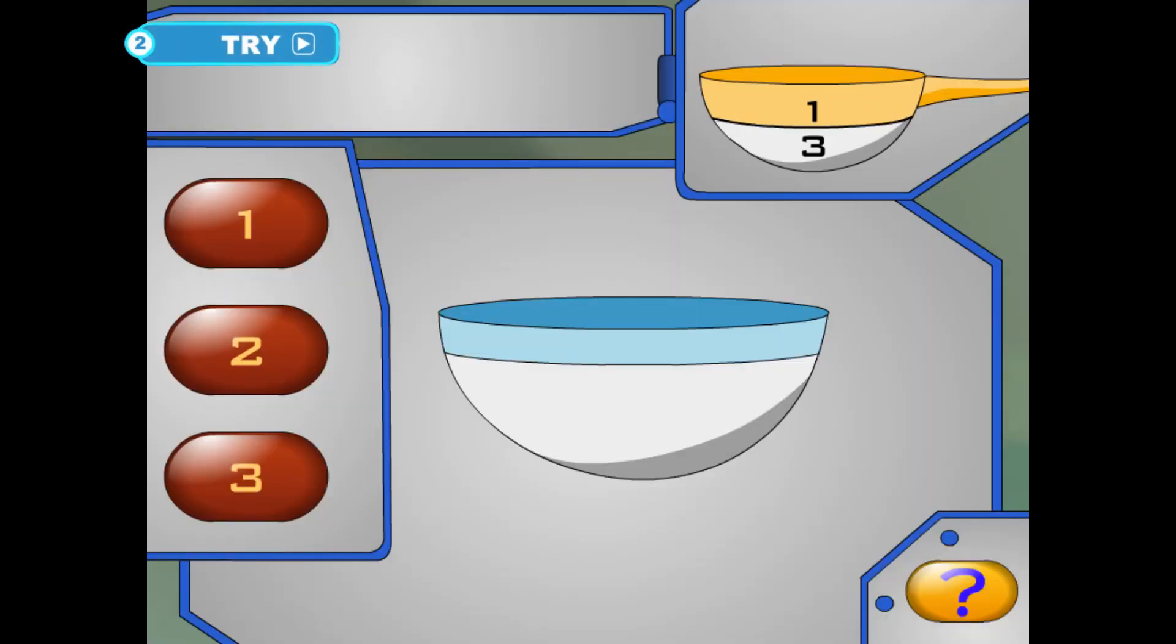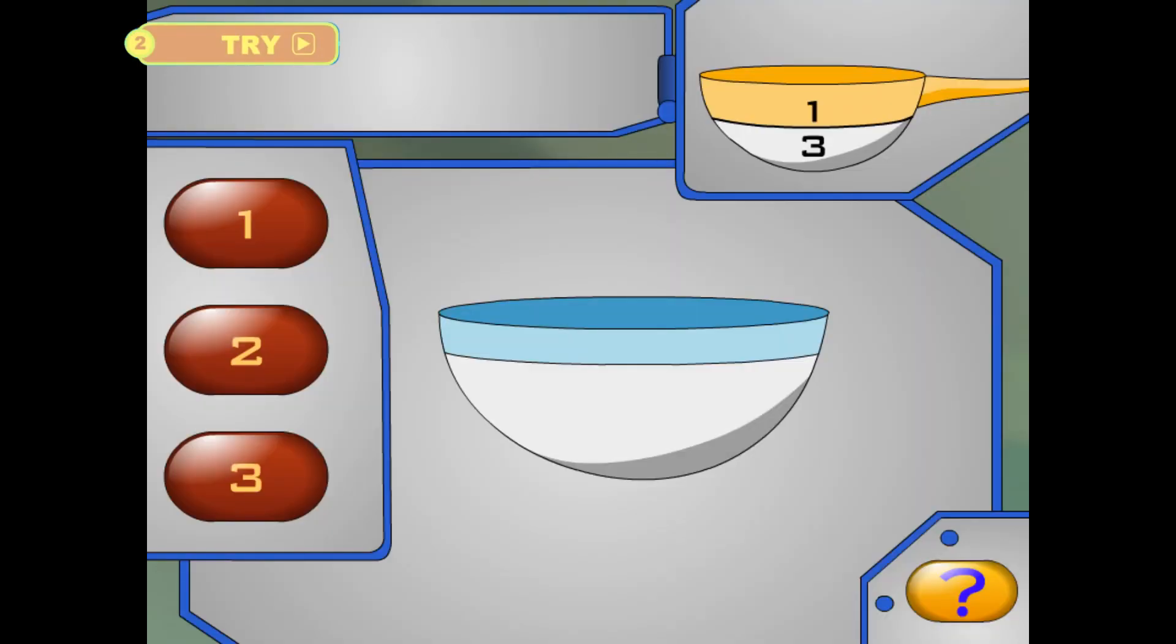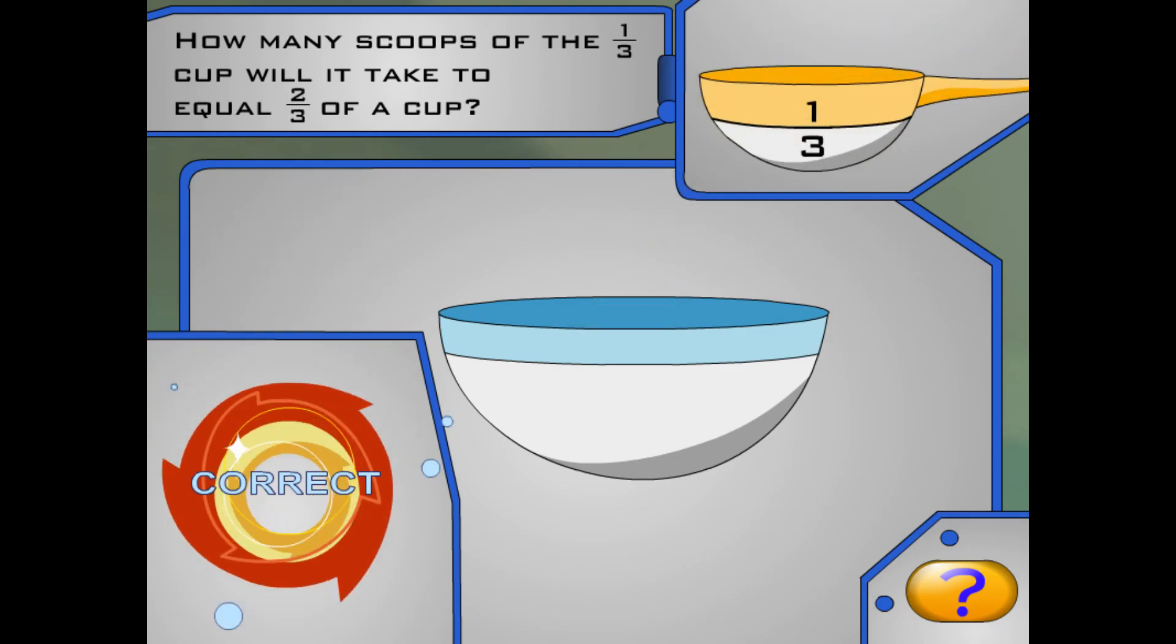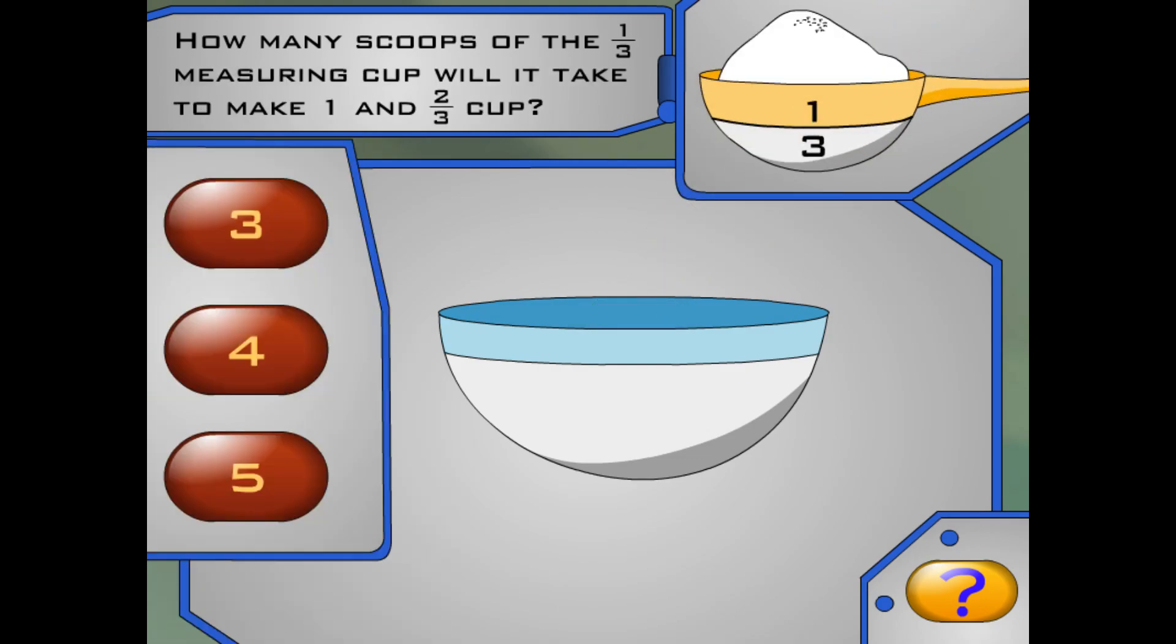Okay! Let's bake this cake! How many scoops with the one-third cup will it take to make two-thirds of a cup? Awesome! Now I need to add one and two-thirds cup of sugar! How many scoops with my one-third measuring cup will it take to make one and two-thirds cup? Yeah! That's right!